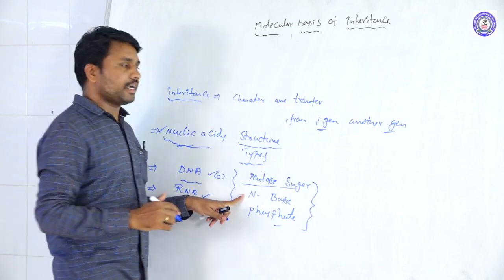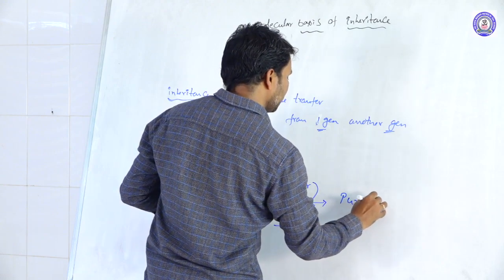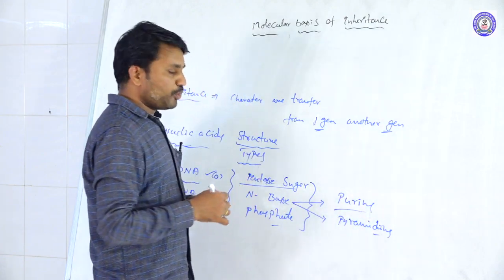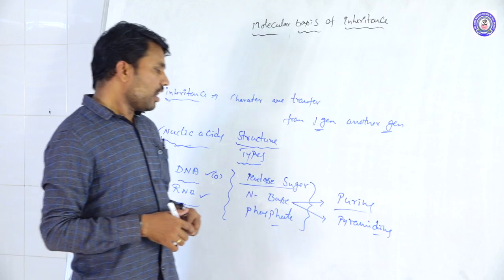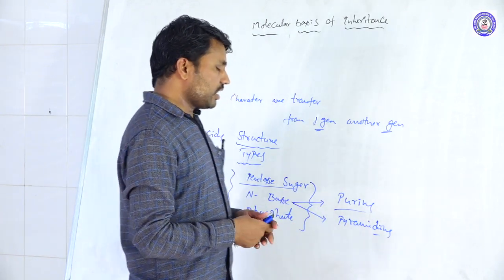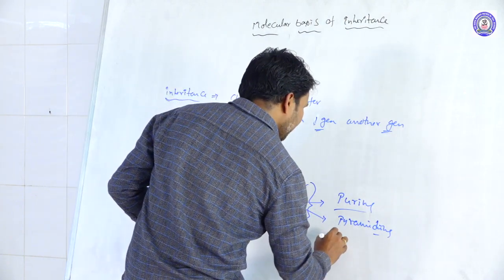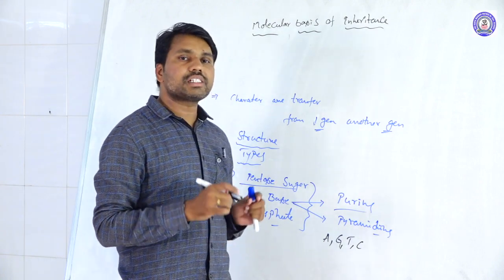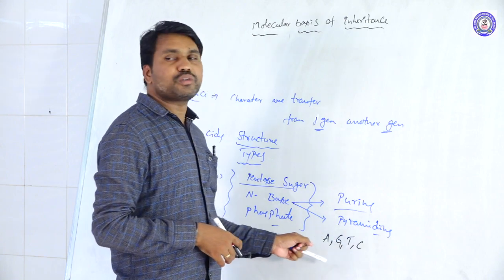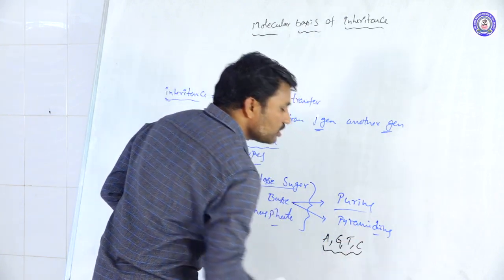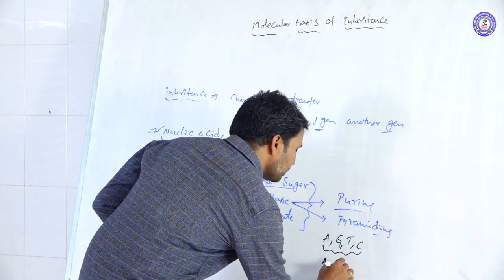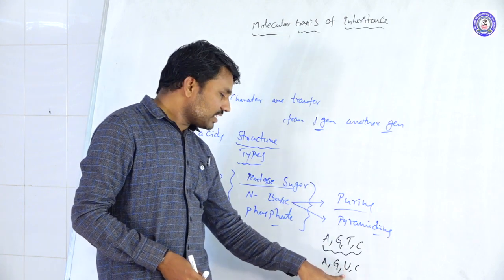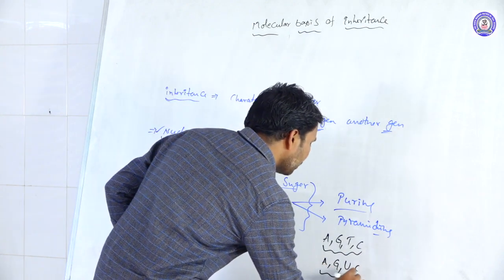The nitrogen bases are of two types: purines and pyrimidines. In DNA, these are adenine, guanine, thymine, and cytosine. In the case of RNA, instead of thymine, uracil is present. So RNA has adenine, guanine, uracil, and cytosine. Phosphate ions form the phosphate backbone through phosphodiester bonds.